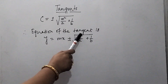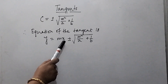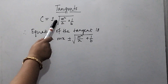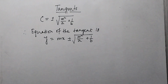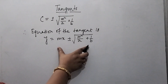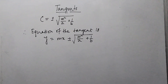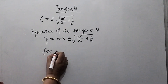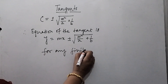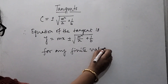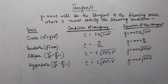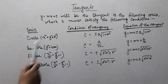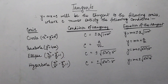We get that c = ±√(m²/a + 1/b) is the condition of tangency, and hence the equation of the tangent is y = mx ± √(m²/a + 1/b). This particular representation gives the equation of the tangent for any finite value of m.